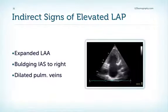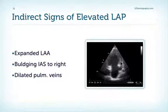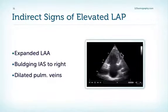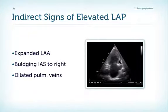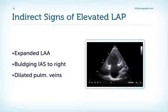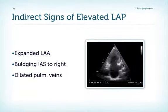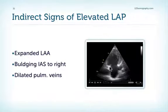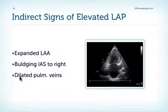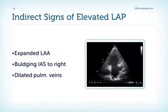There are a number of indirect signs of elevated filling pressure. One is the dilated and expanded left atrial appendage — here is a patient with hypertrophic cardiomyopathy and a huge expanded left atrial appendage, nicely seen in the two-chamber view. Another sign is the bulging of the interatrial septum towards the right. Additionally, you can sometimes see dilated pulmonic veins, visible in the four-chamber view or sometimes in other views.